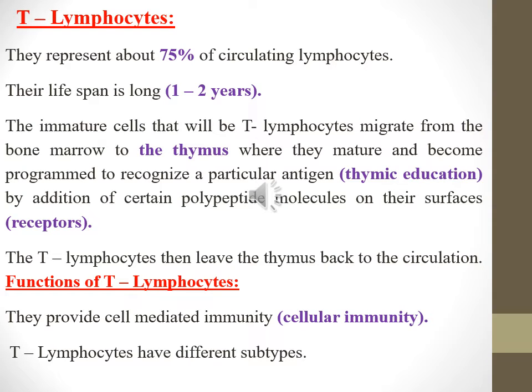T lymphocytes represent about 75 percent of circulating lymphocytes, with a lifespan of one to two years. The immature cells that will become T lymphocytes migrate from the bone marrow to the thymus, where they mature and become programmed to recognize a particular antigen — a process called thymic education — by addition of certain polypeptide molecules called receptors on their surfaces. The T lymphocytes then leave the thymus back to the circulation.